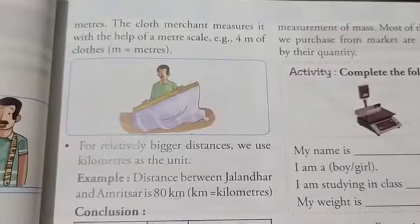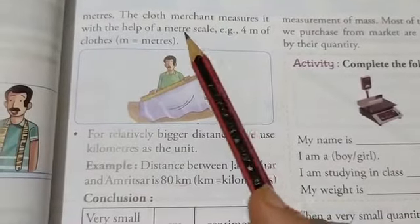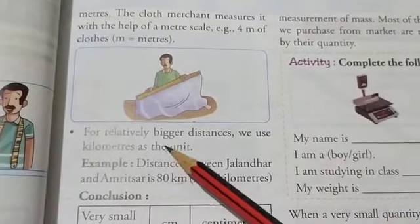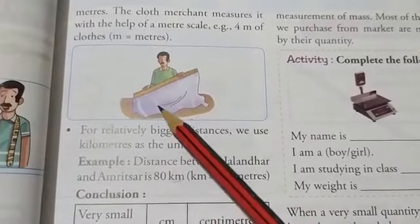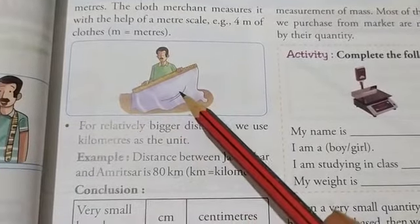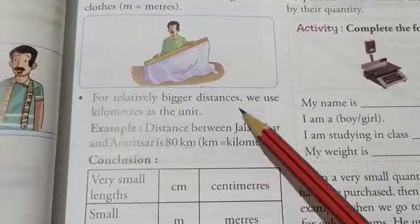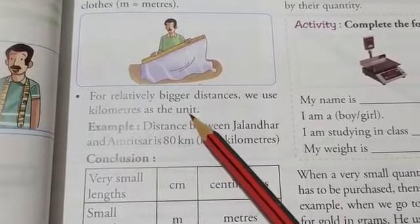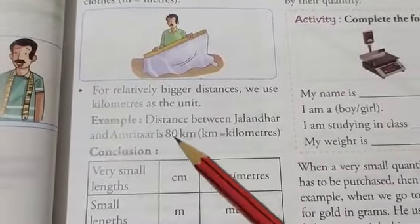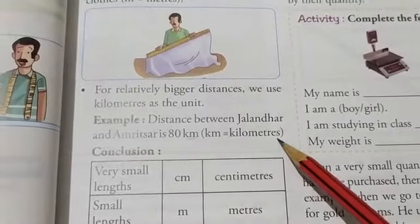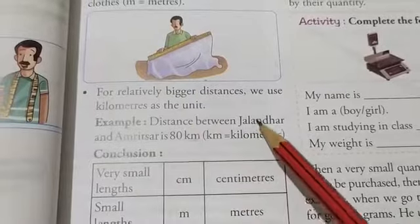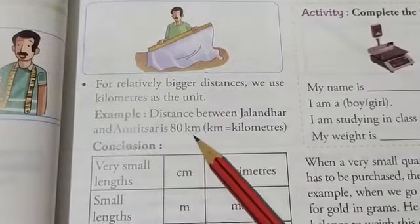To measure large lengths, we use meter scale because meter is a bigger unit than centimeter. For example, the cloth merchant measures the length of the cloth with the help of a meter scale. And for much bigger distances, we use kilometers as a unit. Like the distance between any two cities is written in kilometers. For example, distance between Jalandhar and Amritsar is 80 kilometer.